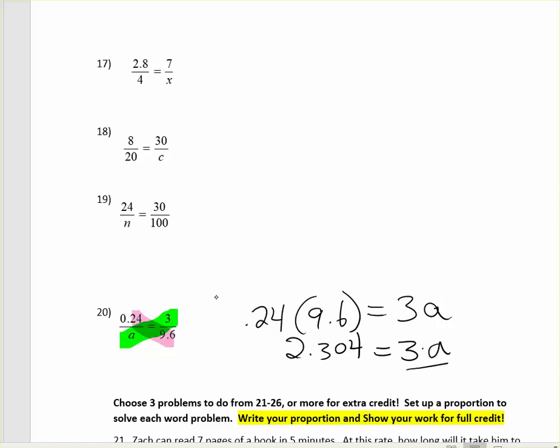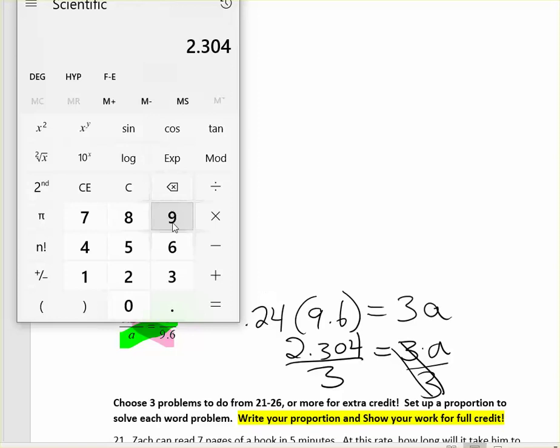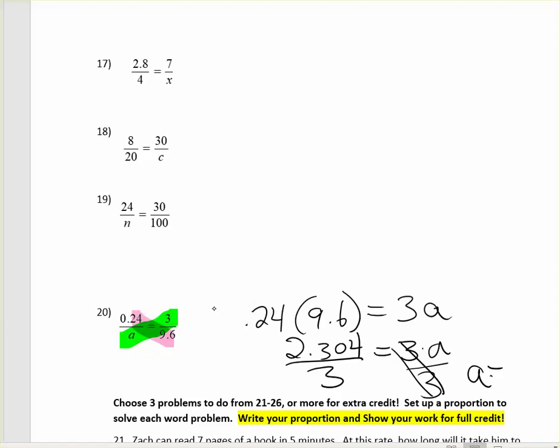Now to solve this, you would divide both sides by 3 because that's the opposite of multiplying by 3. So I have 2.304, and I need to divide that by 3, which equals 0.768. So a is equal to 0.768. So it's okay to get decimals for answers on these problems.